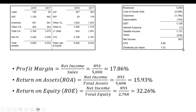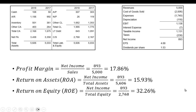Likewise, with the return on assets — net income divided by total assets of $5,606. For these two ratios, you need the income statement and the balance sheet. Your hardware store may be generating a relatively small net income compared to Home Depot and Lowe's, but you're also using a whole lot less assets. So here it's 15.93%, and the return on equity is net income divided by equity, which is the common stock of $2,768 — so that's 32.26%.